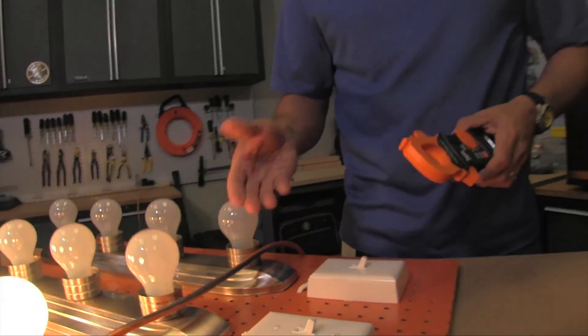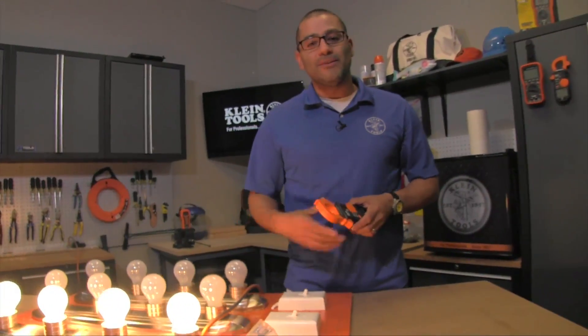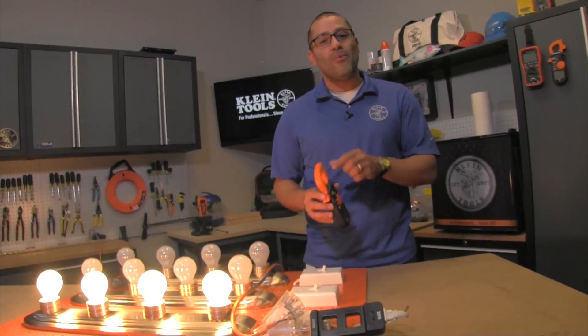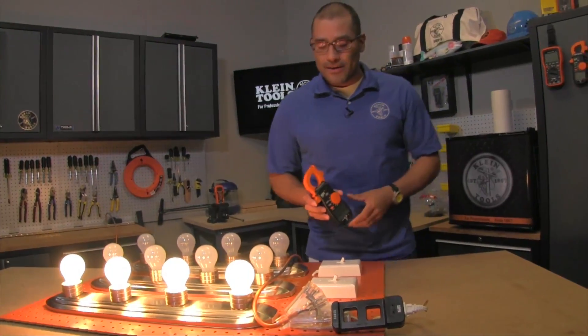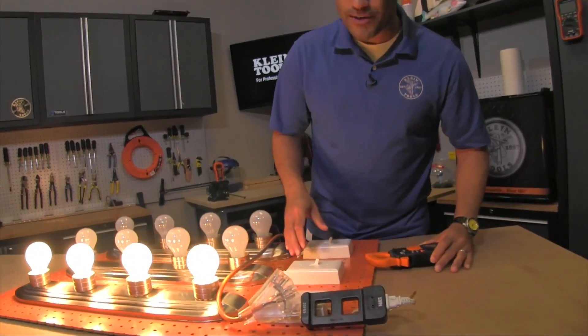in this wire you've got a hot and a neutral running through. Well, those signals will cancel each other out when the clamp meter's clamped around it. So in this case, what we would want to do is actually split the lines apart.